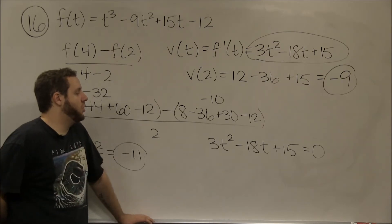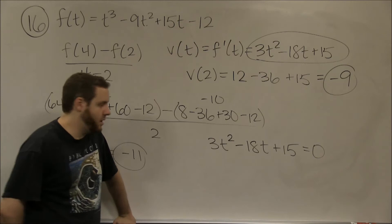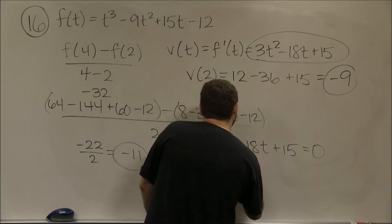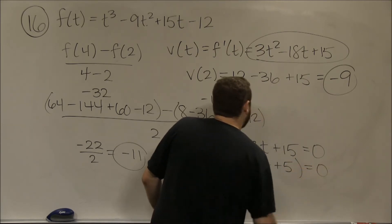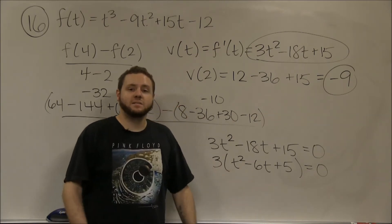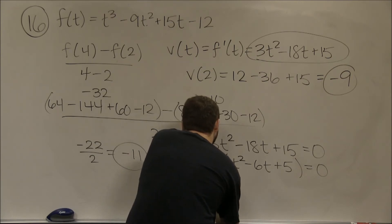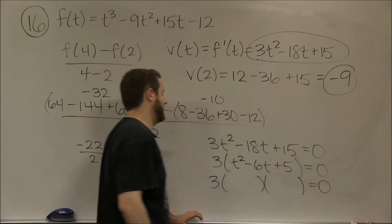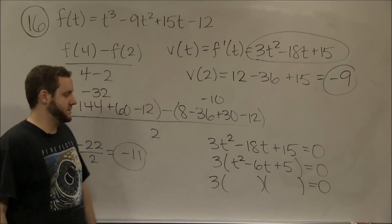We want 3t² - 18t + 15 = 0. Before we start to solve this, notice that all of those terms have 3 in common, so we can factor a 3 out. That gives us 3(t² - 6t + 5). If this equals 0, then the part with the variables has to equal 0, and that's a quadratic that can be solved pretty easily.